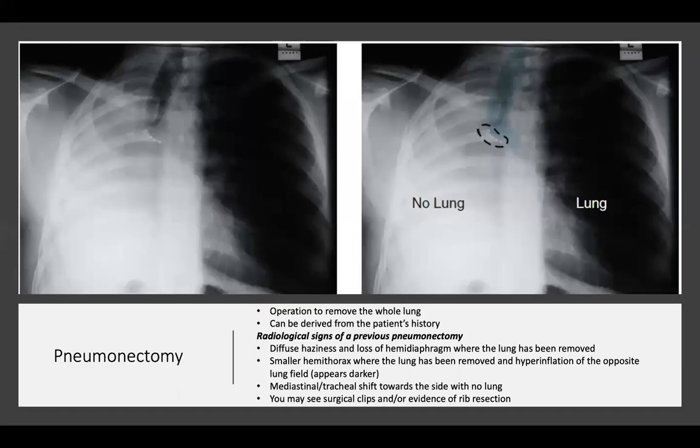That was an example of a radiograph showing pneumonectomy — an operation to remove a whole lung. Radiologic signs include diffuse haziness and loss of hemidiaphragm on the removed side, smaller hemithorax on the removed side, hyperinflation of the opposite lung field appearing darker, and mediastinal or tracheal shift towards the side with no lung. You may also see surgical clips or evidence of rib resection. Note that you cannot differentiate between a pneumonectomy and a complete lung collapse on a chest radiograph, as they both look the same.